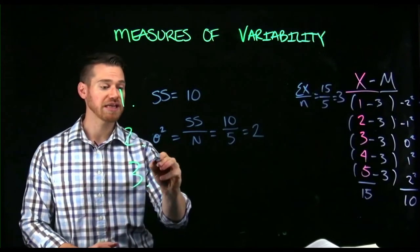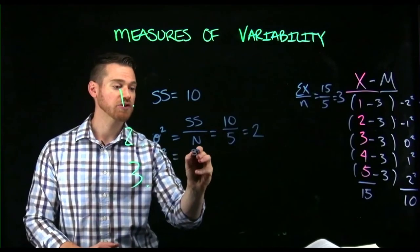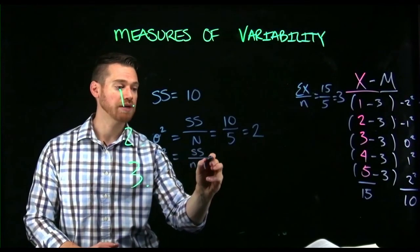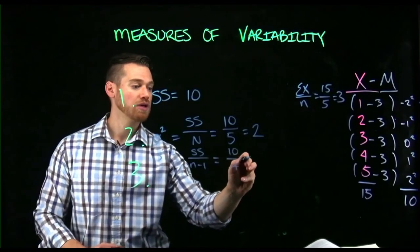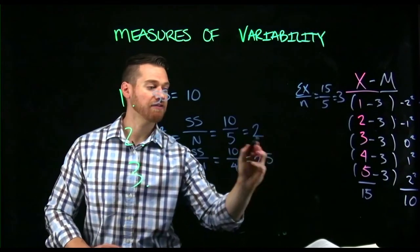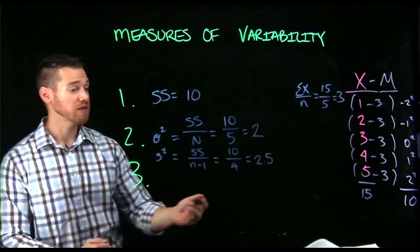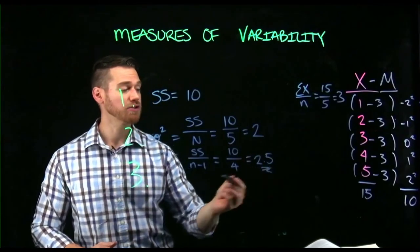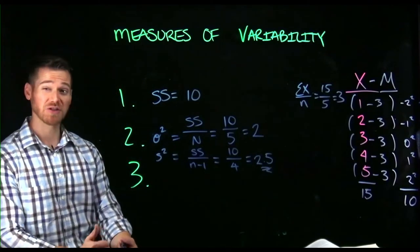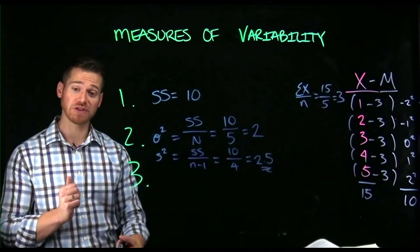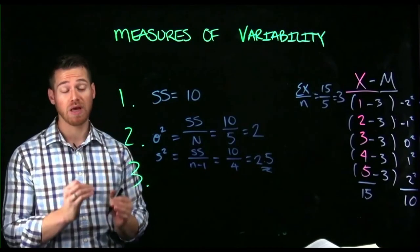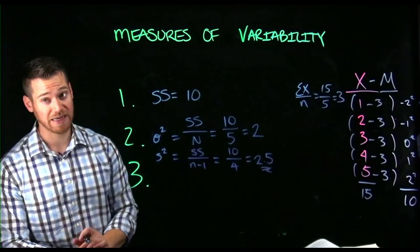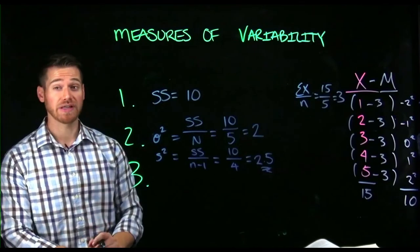Now, if we were to do a sample variance, we'd have sum of squares over N minus one equals 10 over four equals 2.5. And that's important to note. A sample variance will always be larger than a population variance because there's probably more variability in the population than you've captured just in your sample. And that's why that becomes an unbiased estimate by making the estimate of the variance a little larger.